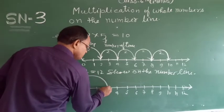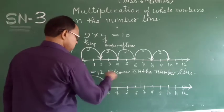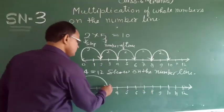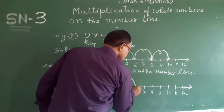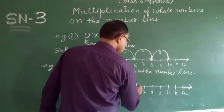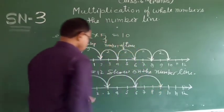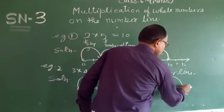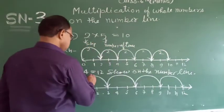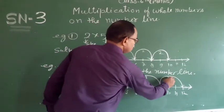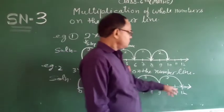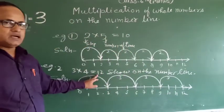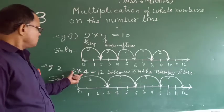Taking steps of 3, we move 4 times toward the right side. Step of 3, and again step of 3 — thus we go on to the number 12. Here, 12 is the result of the multiplication of the two whole numbers.